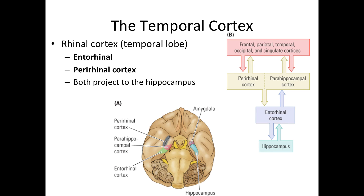Temporal lobe areas bordering the rhinal fissures include the perirhinal cortex and the entorhinal cortex. These cortices provide major routes of neocortical input to the hippocampal formation. Input from sensory areas in the cortex flows to the medial temporal cortical perihippocampal and perirhinal regions, then to the entorhinal cortex, and from there finally into the hippocampus. The hippocampus then feeds information back to the medial temporal cortical regions.